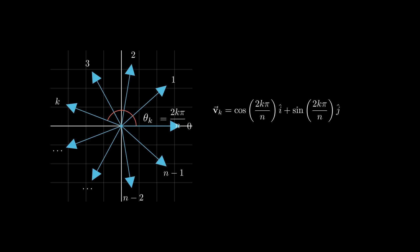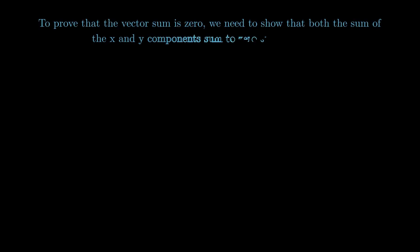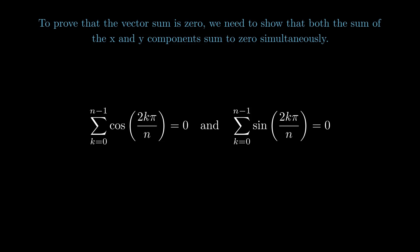Now, to find the total vector sum, we add up all vectors from k equals 0 to n-1. Now, we can break down this expression into x and y components. Thus, the sum of all vectors is the sum of the x components plus the sum of the y components. Now, to prove that the vector sum is 0, we need to show that the sum of both the x and y components to be 0 simultaneously. That is, we need to prove the sum of cos(2kπ/n) equals 0 and the sum of sin(2kπ/n) equals 0 from k equals 0 to n-1.